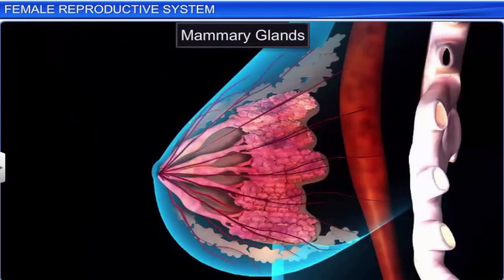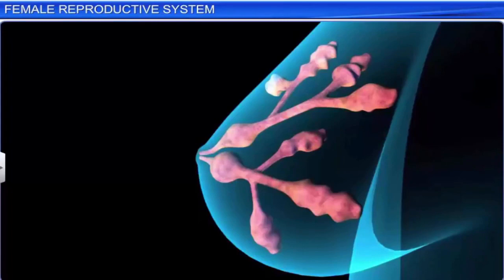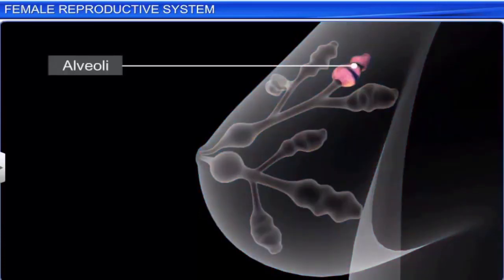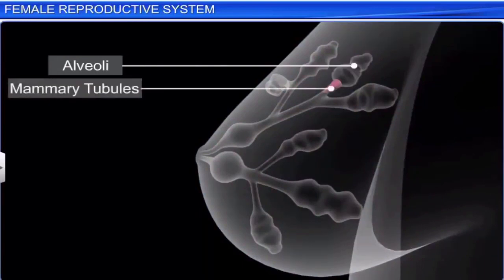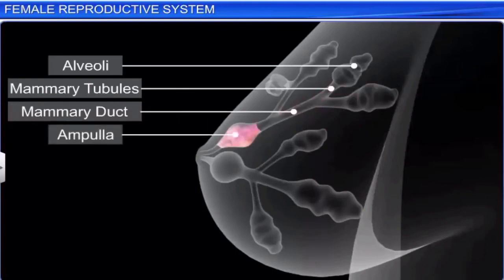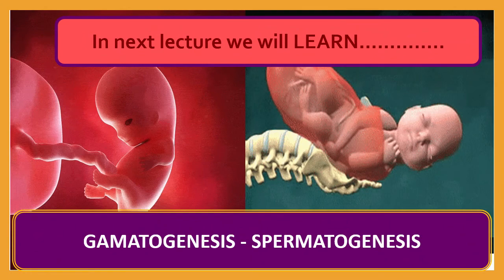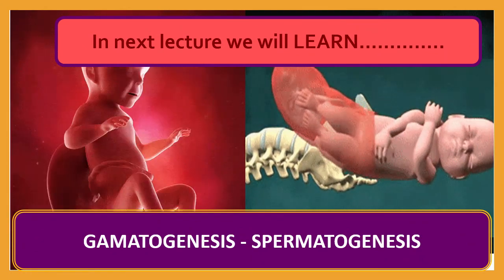The mammary glands or breasts are modified sweat glands lying over the pectoral muscles, containing glandular tissues and a variable amount of fat. Internally, each breast is divided into 15 to 20 mammary lobes containing clusters of cells called alveoli. The alveoli open into mammary tubules; tubules join to form the mammary duct; several ducts join to form a wider ampulla connected to the lactiferous duct, which opens through the nipple from which milk is sucked. In the next lecture we will learn about gametogenesis and spermatogenesis.